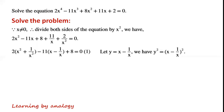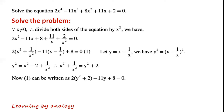Let y equal x minus 1 over x. By squaring both sides and simplifying, we get y² equals x² minus 2 plus 1 over x². By rearranging, x² plus 1 over x² equals y² plus 2. So equation 1 can be written as 2 times (y² plus 2) minus 11y plus 8 equals 0.